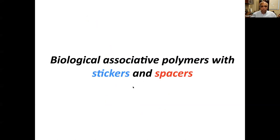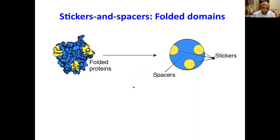As depicted in this cartoon, courtesy of Alex Holhaus, the regions interspersed between stickers are essentially enabling a huddling — the bringing together of stickers into spatial proximity. Therefore, the spacers themselves are unlikely to be major players in engaging in physical crosslinks, but they are enabling the physical crosslinking of the stickers. So let's try to map the stickers and spacers formalism directly onto biological systems.